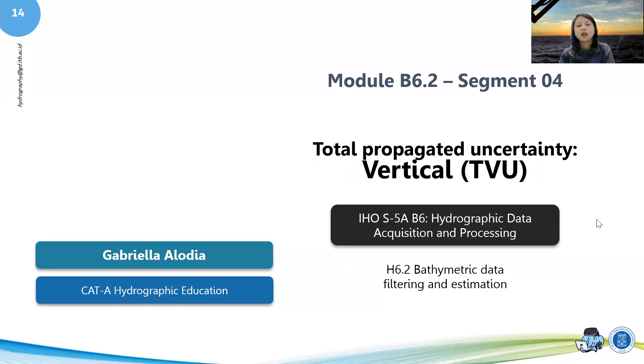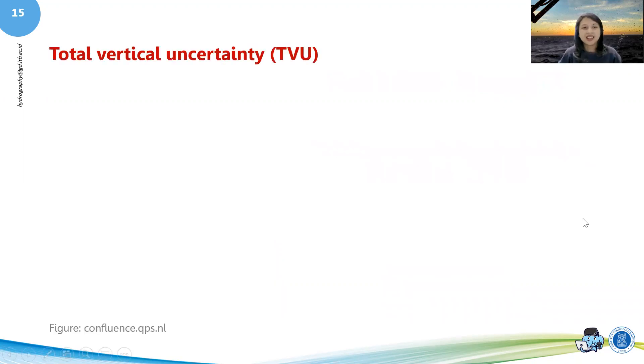So we have known the THU or the Total Horizontal Uncertainty. Now we're going to talk about the Total Vertical Uncertainty. As we might already guess, the Total Vertical Uncertainty is basically a one-dimensional quantity that's contributing to the vertical measurement.